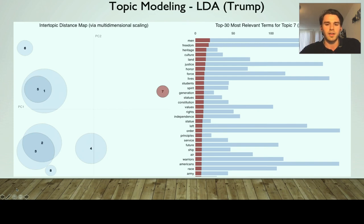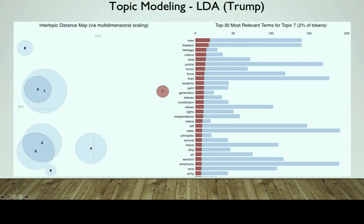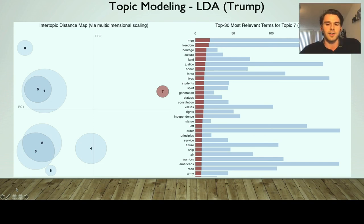For Trump's speeches, topics were more closely clustered, though one stood out clearly: a very 'Trumpian' topic with words like men, freedom, heritage, and statues. The other topics were harder to distinguish, including many generic terms about the economy, jobs, China, and elections — still providing insight into Trump's talking points.